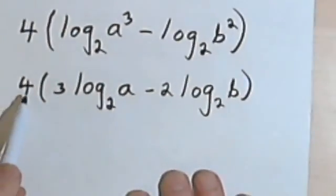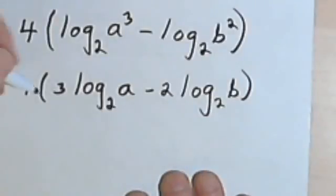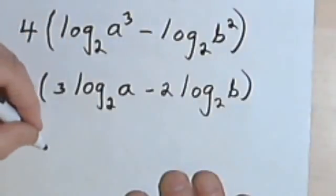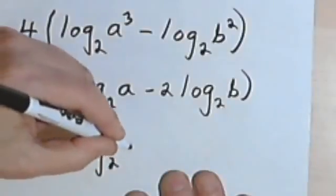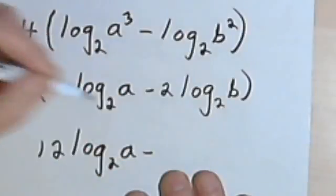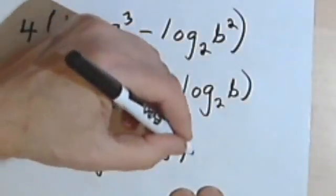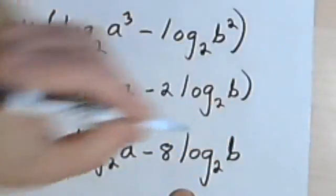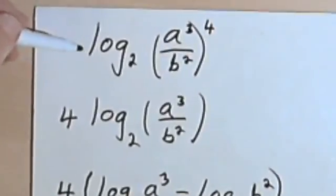Now I can distribute this 4, which is multiplying everything. So 4 times 3 times the log base 2 of a will be 12 times the log base 2 of a, minus 4 times 2, which is 8, times the log base 2 of b. So this is my expanded form of the original single logarithm.